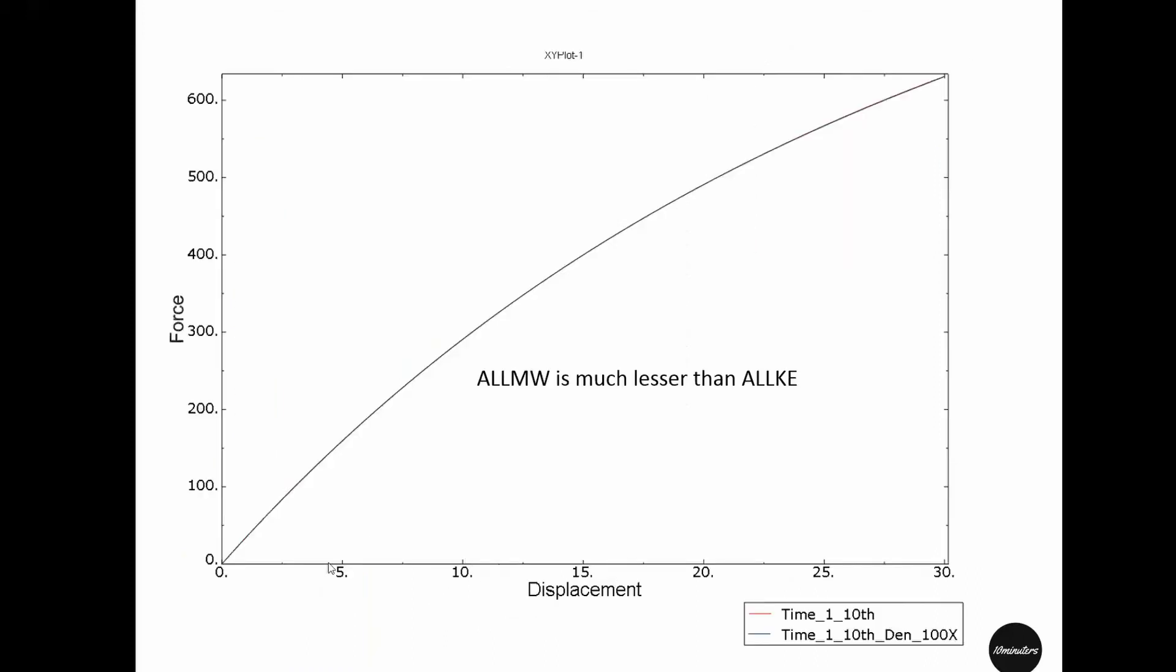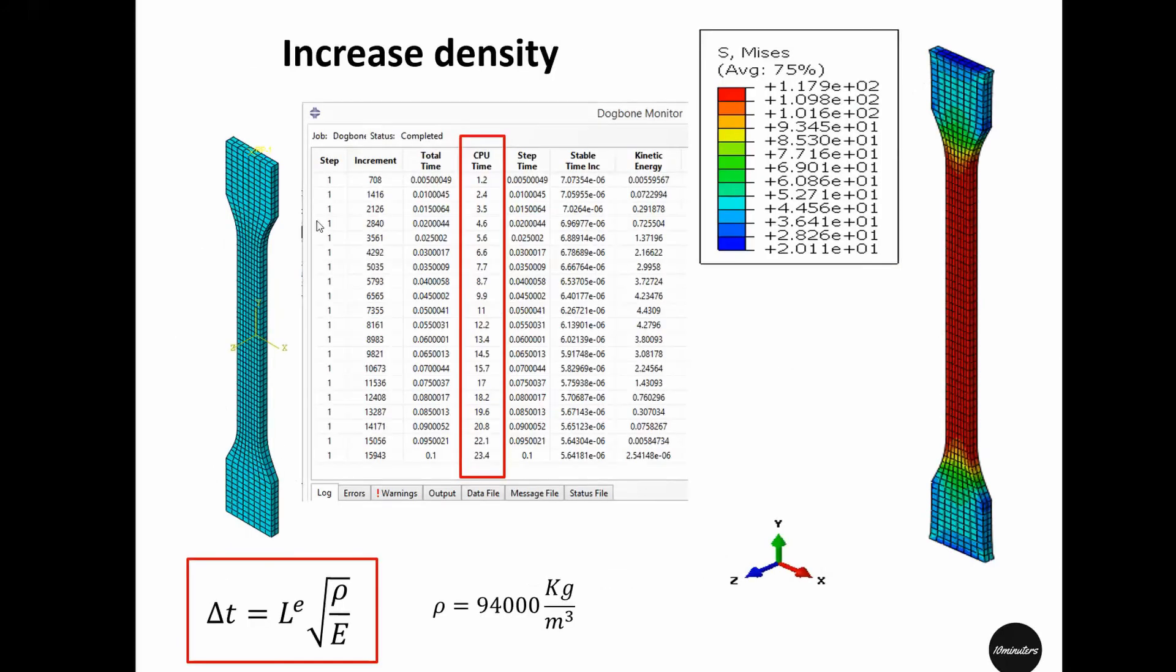Once plotted, the force and displacement response for each model, the regular density and 100 times larger density, we could see the force-displacement response were almost identical. That means at least in this particular case, by increasing the density the simulation result did not vary much, not in force-displacement response and also not in the stress distribution or the deformation.